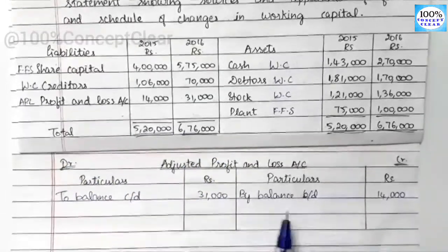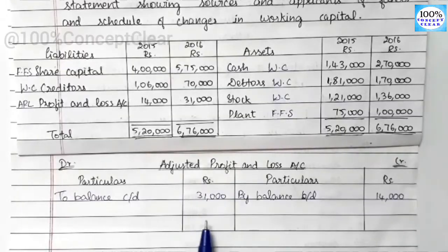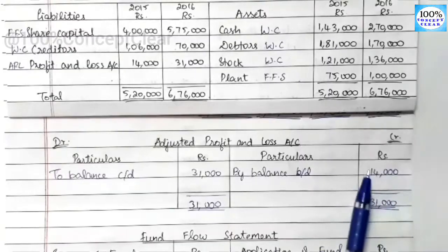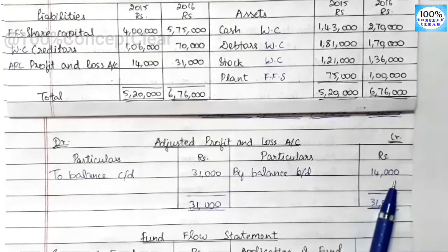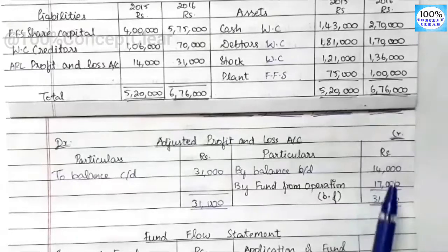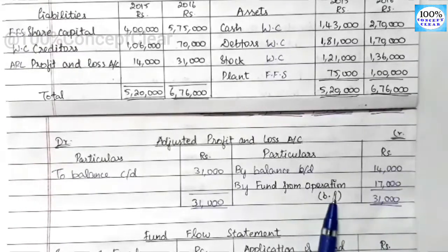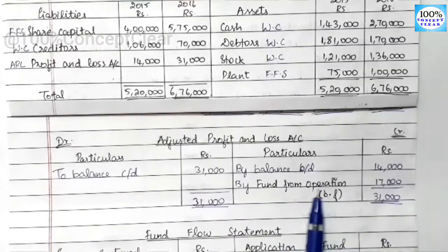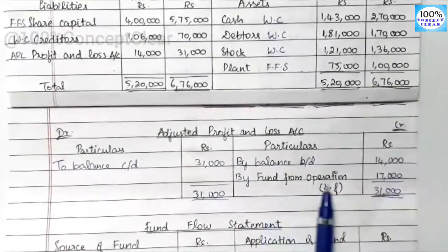We connect the taxes to the P&L account. Looking at both sides: the debit side has 31,000 and the credit side has 14,000, so the debit side value is higher. Since 31,000 is greater, we note the total of 31,000 on both sides. The balancing figure on the credit side represents fund from operations — this gives us a positive figure for fund from operations.